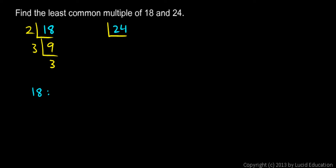24 is divisible by 2 — it's 2 times 12. 12 is divisible by 2, it's 2 times 6. And 6 is divisible by 2 also — it's 2 times 3.